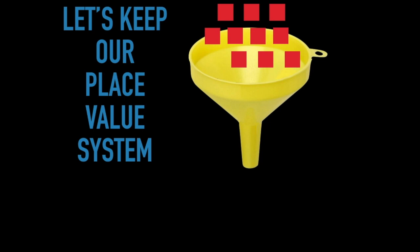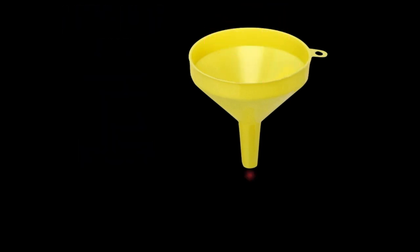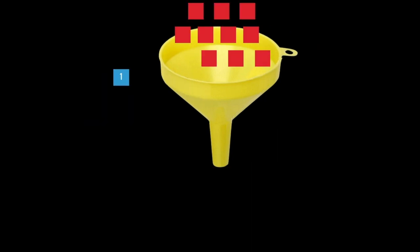As we think about designing our area-based number system, let's keep the ones, tens, hundreds, thousands system that we're familiar with. If we melted down 10 ones, for example, we could have a long shape for 10, which might look familiar if you've ever used base 10 blocks. But what if we wanted 10 to look like a perfect square like the blue 1 does?